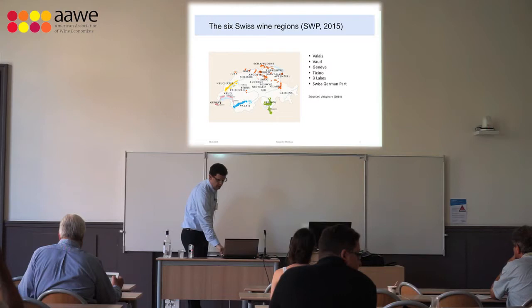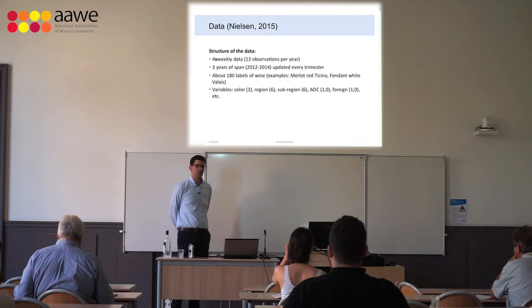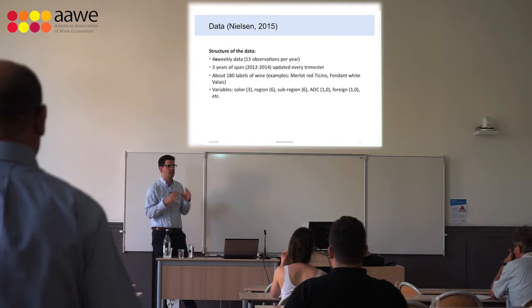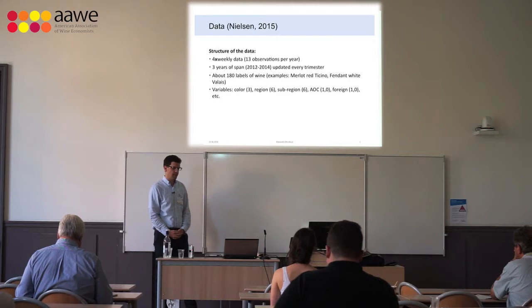The structure of the data: we have four-weekly data, so 13 observations per year, and a time span of three years — now we are also getting 2015. We have about 180 labels — for example, Merlot-Red-Ticino or Fendant-White-Valais — which is a combination of wine variety, color, and region. We also have different variables like color, region, AOC, and foreign wines.